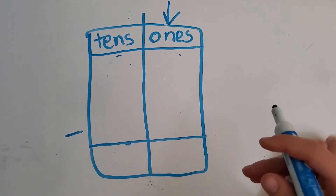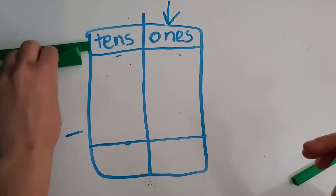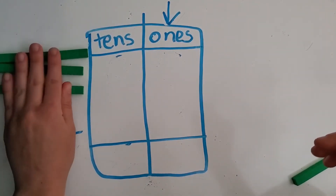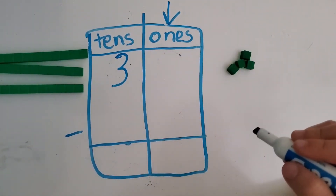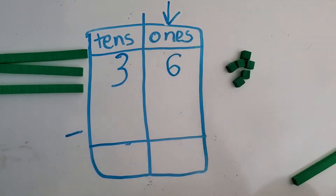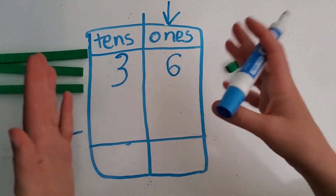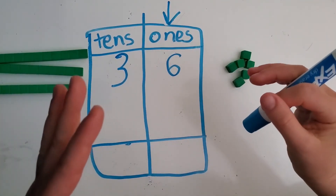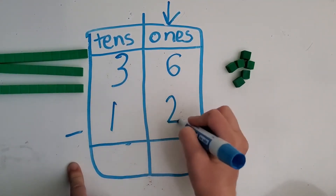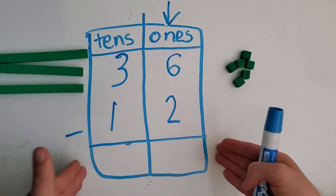Let's find 36. We're going to start off using our models, then we're going to practice without them. That gives us three tens and six ones. 36 is the whole — that's how many muffins there are in all. Now we know that there are 12 blueberry, but we want to figure out how many are not blueberry. So that means we need to subtract 12. That's part of the group of muffins. Now we need to find the other part by using subtraction.